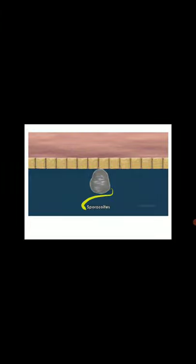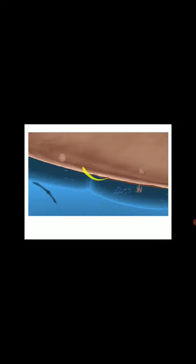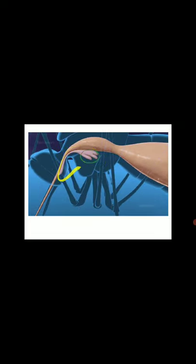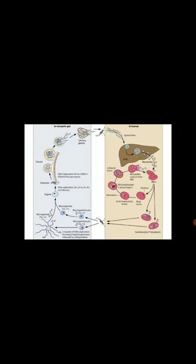Inside the oocyst, the ookinete divides to form many sporozoites. These sporozoites are released from the cyst and stored in the salivary gland of the mosquito. When this mosquito bites another healthy human, the sporozoites enter the healthy human, forming the infectious stage. In the summary chart, we can observe the complete life cycle: sporozoites enter the liver, reproduce asexually to yield merozoites, which then attack red blood cells and form ring stage, trophozoite stage, and schizont forms, before rupturing the RBCs.